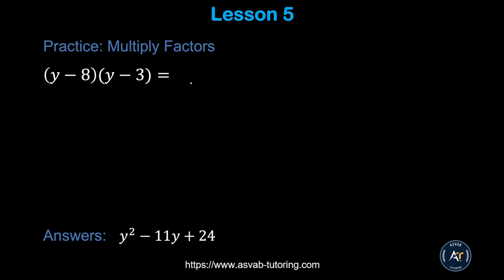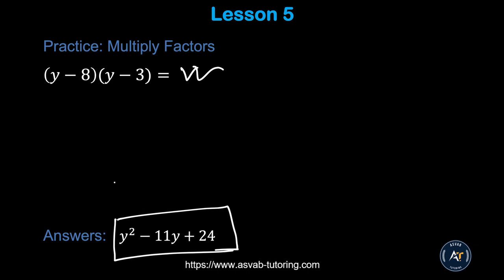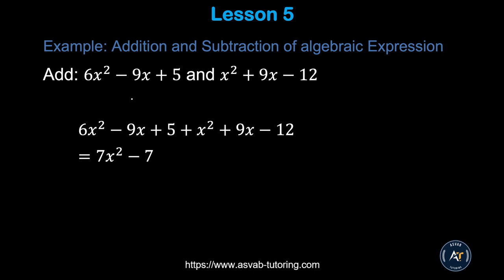There is a practice problem — try it by yourself and make sure you get the correct answer. If you don't, go back and practice the previous examples. Next, we'll learn how to simplify algebraic expressions. When adding expressions, you combine like terms. Here the like terms are: x squared terms, the 9x terms, and the constant terms.